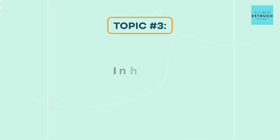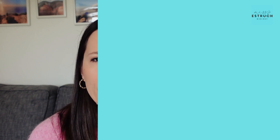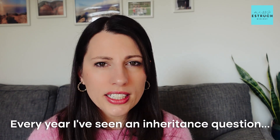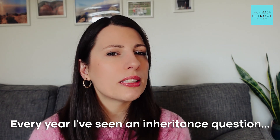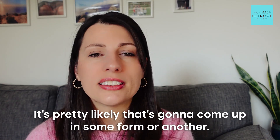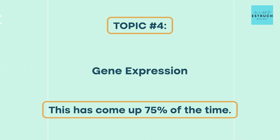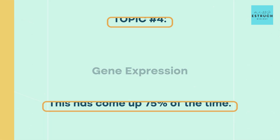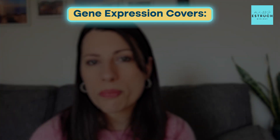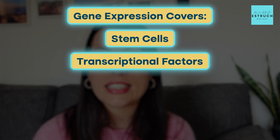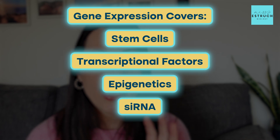Number three is inheritance, which has come up 88% of the time. I'm honestly surprised it wasn't 100% — I feel like every year there's an inheritance question, though it may sometimes appear on paper three rather than paper two. Number four is gene expression, which has come up 75% of the time — six out of eight papers. Gene expression covers stem cells, transcriptional factors, epigenetics, siRNA, and also cancer.